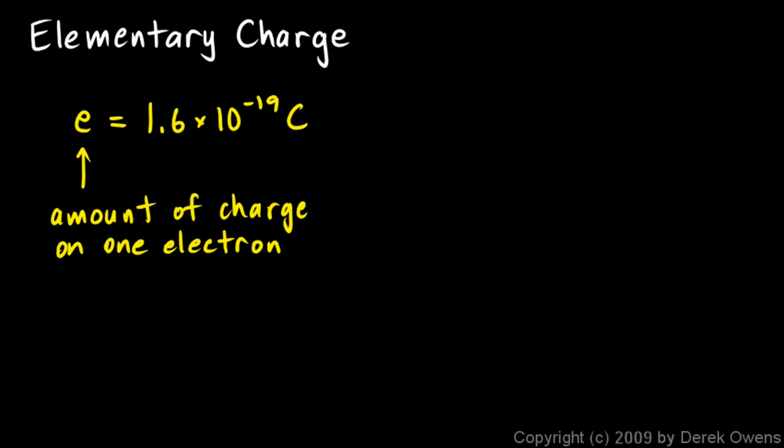Now this is not the same e that you might have seen in math class. When you get to Algebra 2, you run into this number called e. It's a special number that shows up in the natural world, kind of like pi. This is not the same e. It's spelled the same, but that's it. That e is a number in math class, and this e is a number that shows up when we talk about electricity. It's the amount of charge on one electron.